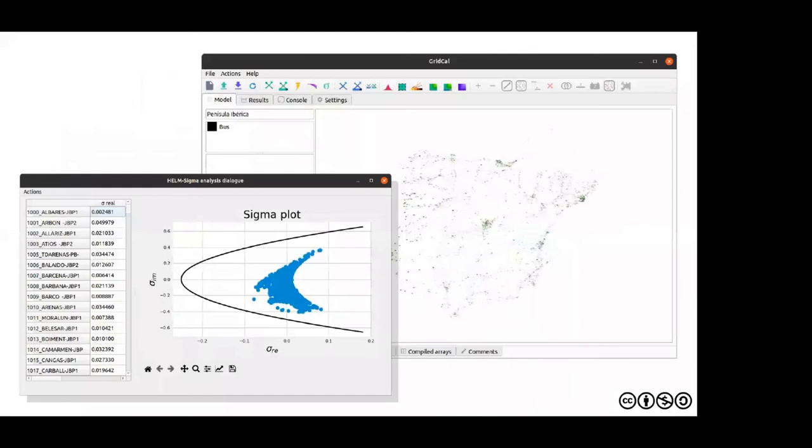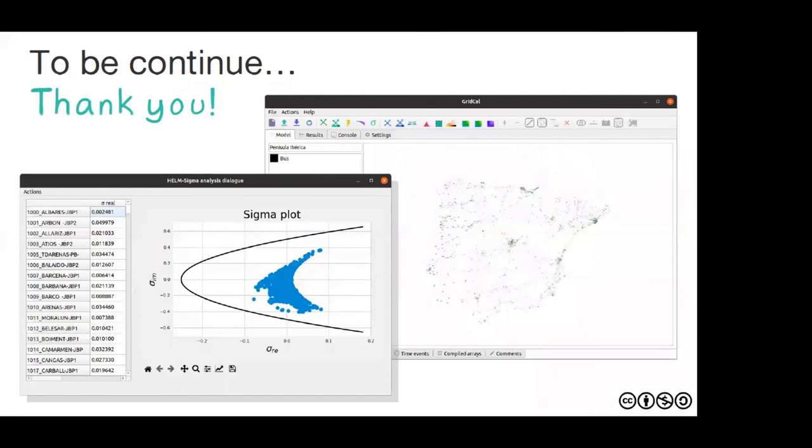Today we have the method implemented in this software called GridCal. As you can see here is the Iberian Peninsula, which is like 5,000 nodes and the method is solving. There is a lot of side effects to the method, like the sigma plot, which tells you how far are the voltages of the node of the collapse point, which is depicted by the black curve. So this is it. Thank you. And to be continued.